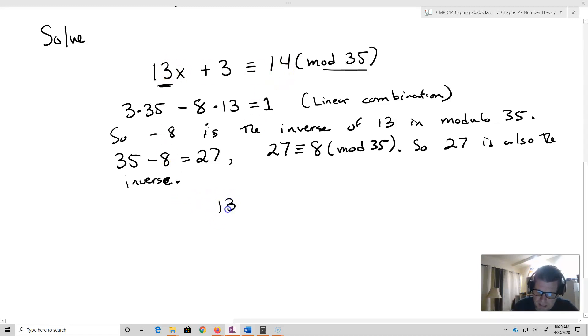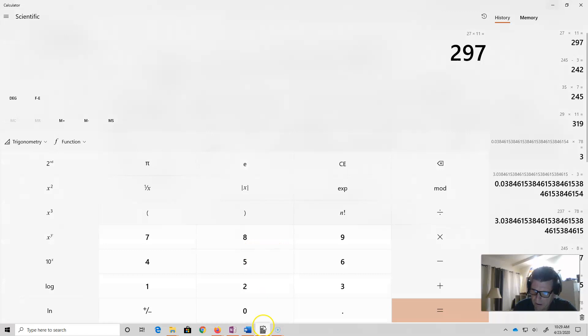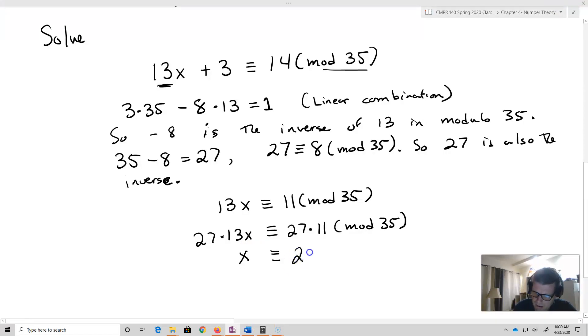Now, now I'm going to do some algebra. So this is going to be 13x is then going to be equivalent to 11 mod 35. Then I'm going to multiply both sides now by 27. So that's going to be 27 times 13x is equivalent to 27 times 11 mod 35.